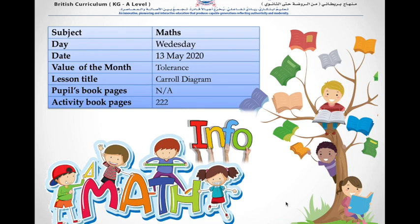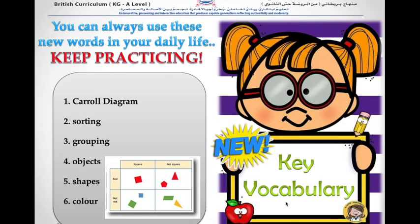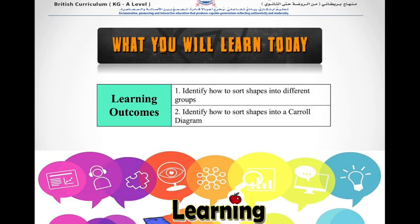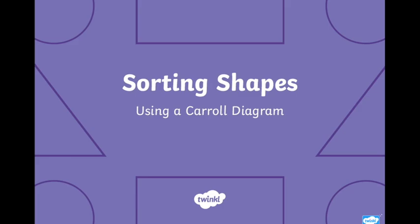Welcome to today's maths lesson. In this lesson we are going to be doing all about Karel diagrams. We will need the words Karel diagram, sorting, grouping, objects, shapes and color. At the end of this lesson you will identify how to sort shapes into different groups and how to sort shapes into a Karel diagram. Let's begin.